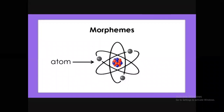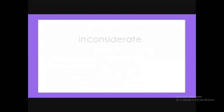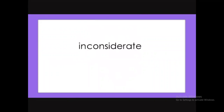Morphemes are the smallest meaningful units of language that cannot be divided without losing their meaning. Check the following word: 'inconsiderate.' This is one word and it has three morphemes: 'in,' 'consider,' and 'ate.' You cannot divide any of these three morphemes without losing their sense.